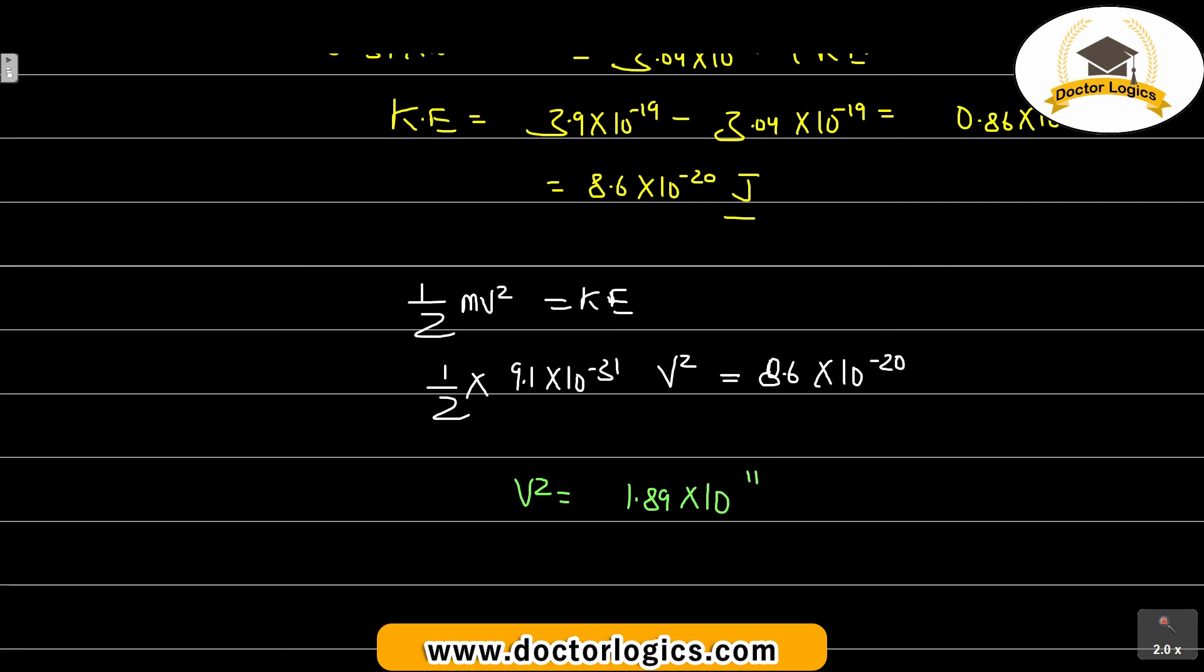This is 1.89 into 10 raise to the power 11. This will be 18.9 into 10 raise to the power 10. Now 18.9 under root, v value 18.9 raise to the power 0.5, this will be 4.34.